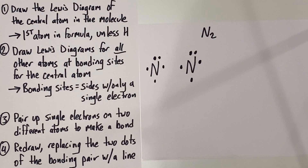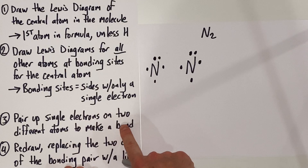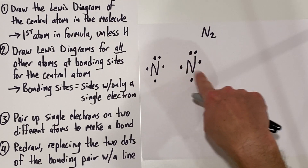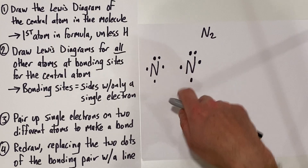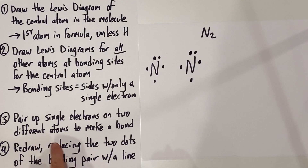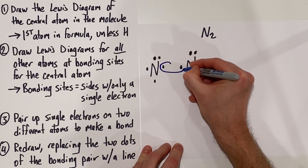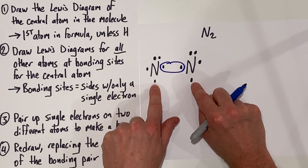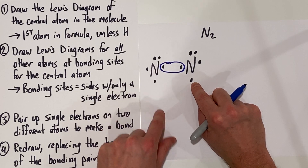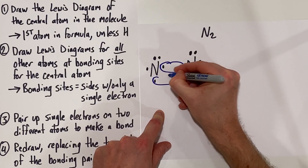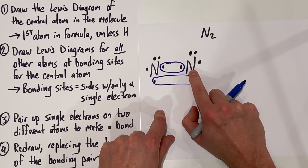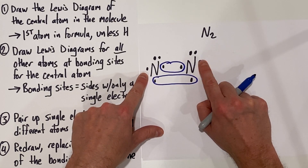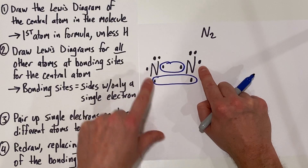We're going to do the same step as before, which is to pair up single electrons on two different atoms to make a bond. One thing you might notice is that nitrogen has three bonding sites, but we only have one other atom to bond with. So let's see how this plays out. Notice we've got single electrons there — these two electrons can be shared between the two nitrogens. We also have other single electrons that are unpaired, and we can pair those up to make a bond as well. It doesn't matter that they're not right next to each other; all that matters is that each atom has a single electron and they can be shared.